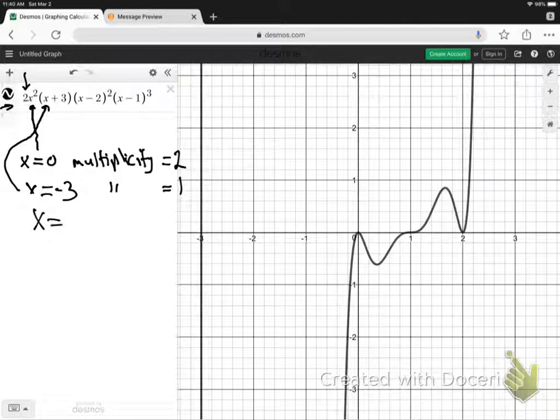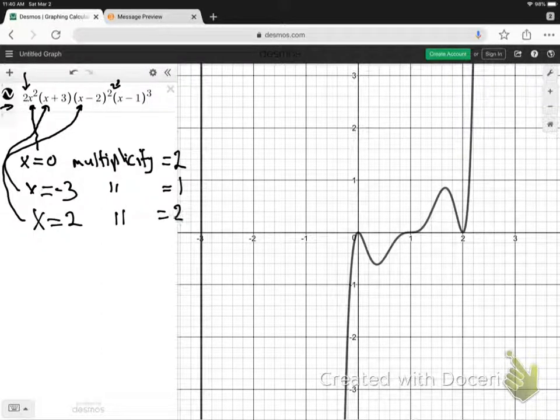We also have x equals positive 2 as a zero, and if you can see there, there it is, positive 2, but again this has a multiplicity of 2 because it's squared.